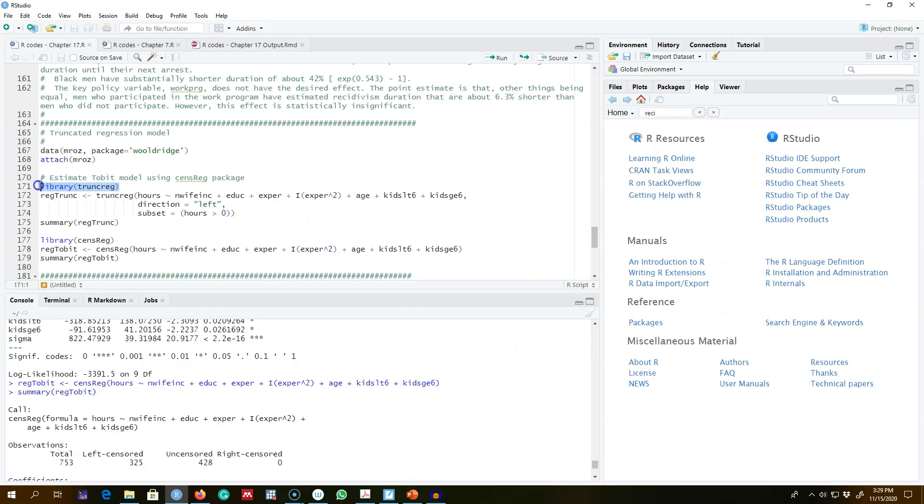To regress this model, we need this library trunkreg, and we're going to use the trunkreg function. The first argument here is our regression formula. And then, remember this variable hours shows the number of hours a woman provided her labor services in the labor market.